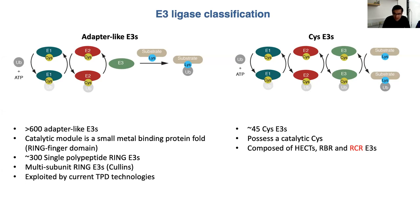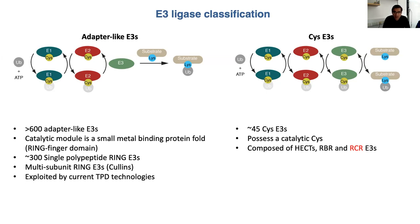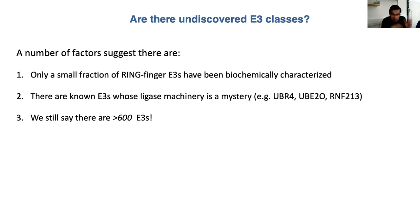I'm going to introduce a new type of ring-linked CIS E3 that we call RCR, or ring CIS relay. My lab is interested in whether there are undiscovered E3 classes, and several factors suggest there are. Only a small fraction of ring finger E3s have been biochemically characterized, and since ring finger domains can be linked to cysteine-dependent machinery, there might be undiscovered classes out there. There are also known E3s with characterized ligase activity but no identifiable ring finger or HECT domain — such as UBR4, UBE2O, and RNF213. Until we can put a finite number on the total count of E3s, our appreciation of mechanistic diversity will remain weak.